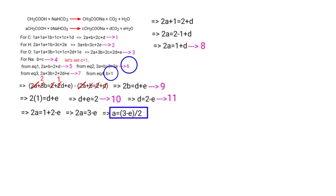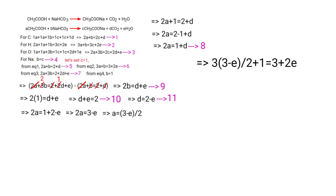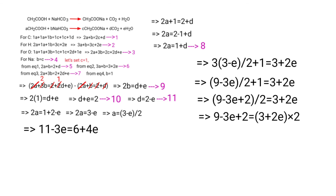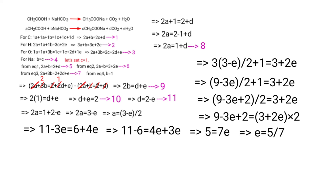Applying the A and B values in Equation 6: 3 times (3 minus E)/2 plus 1 equals 3 plus 2E. Then (9 minus 3E plus 2)/2 equals 3 plus 2E. Multiplying both sides by 2: 11 minus 3E equals 6 plus 4E. So 5 equals 7E, therefore E equals 5/7.